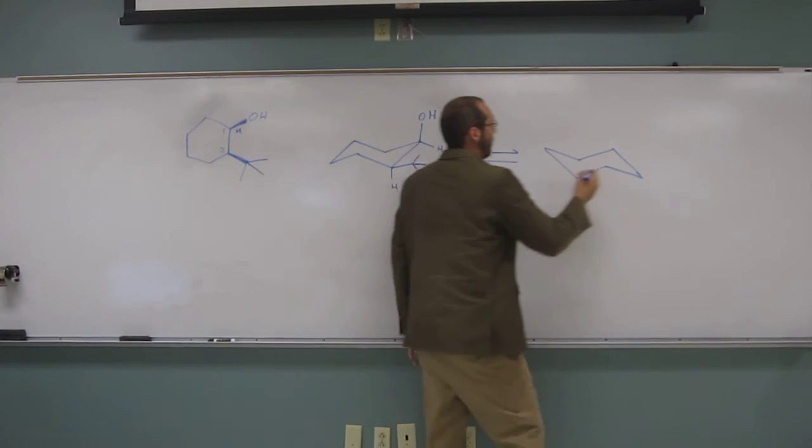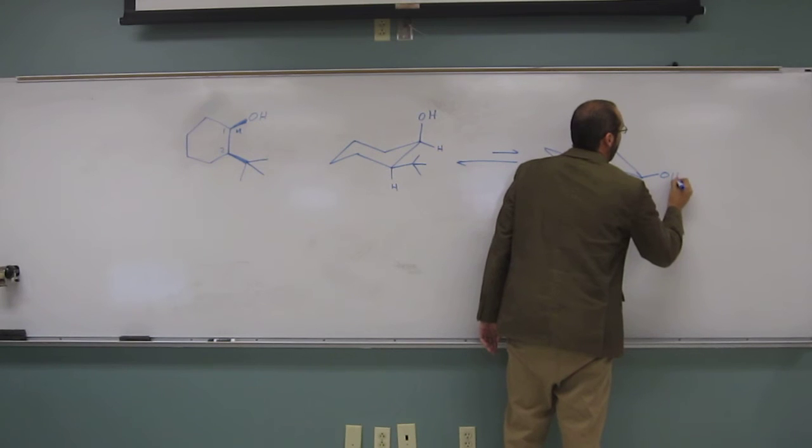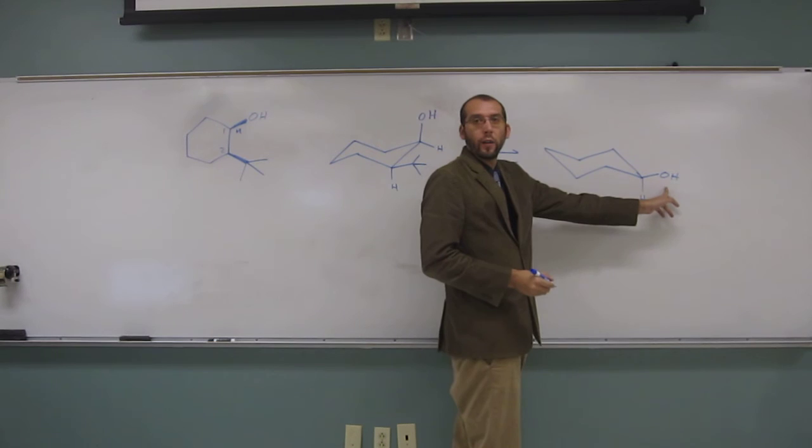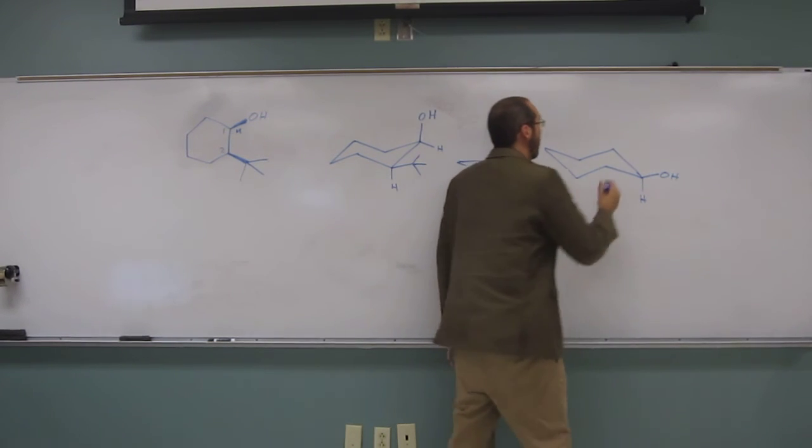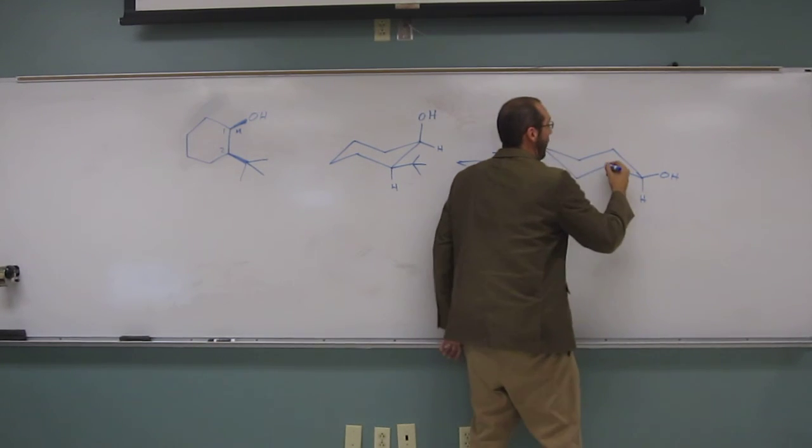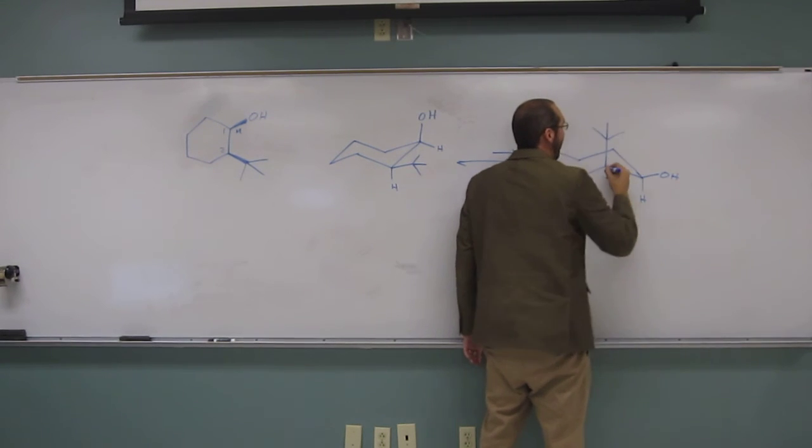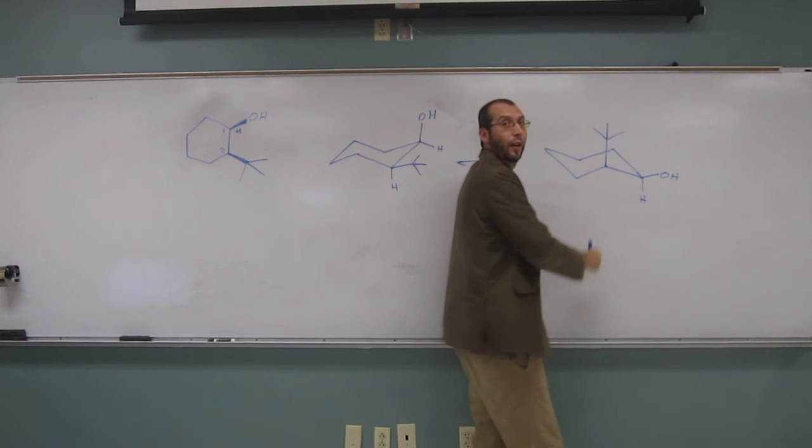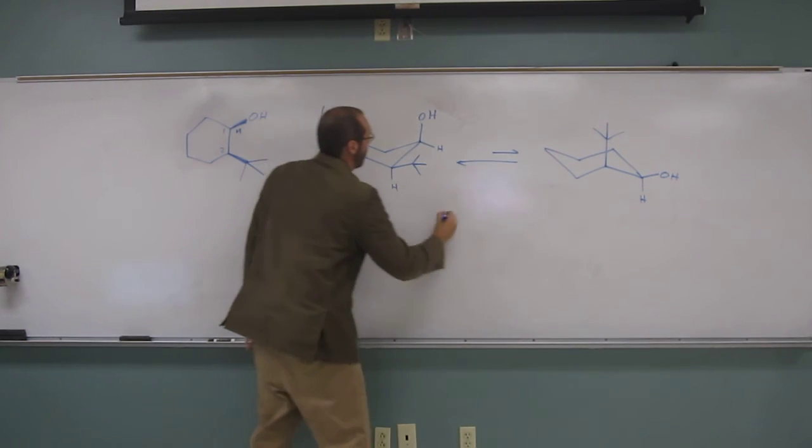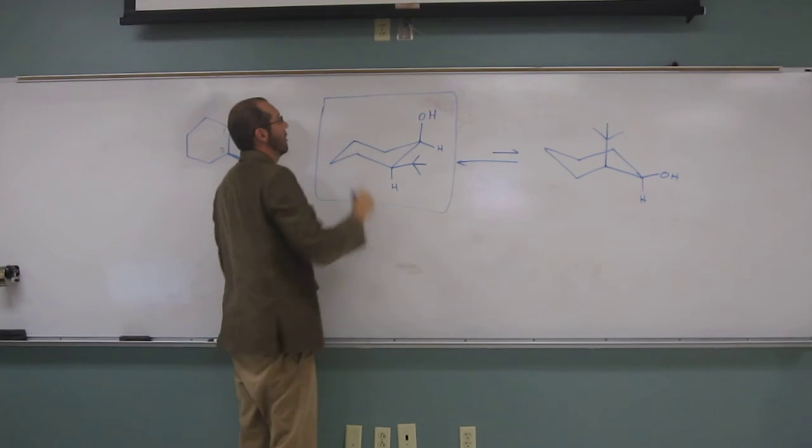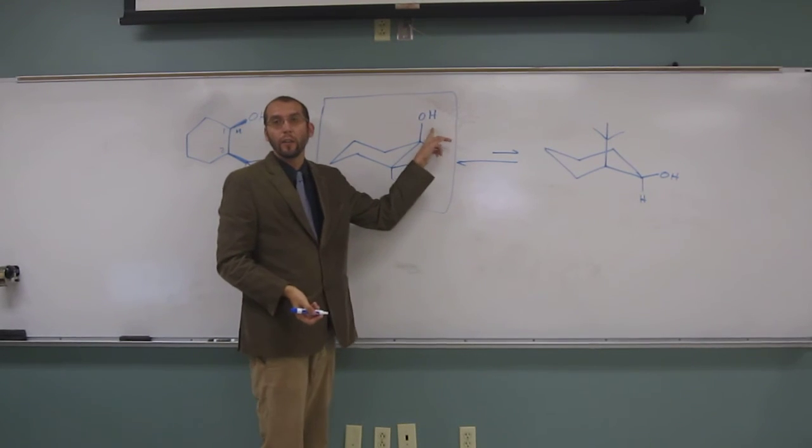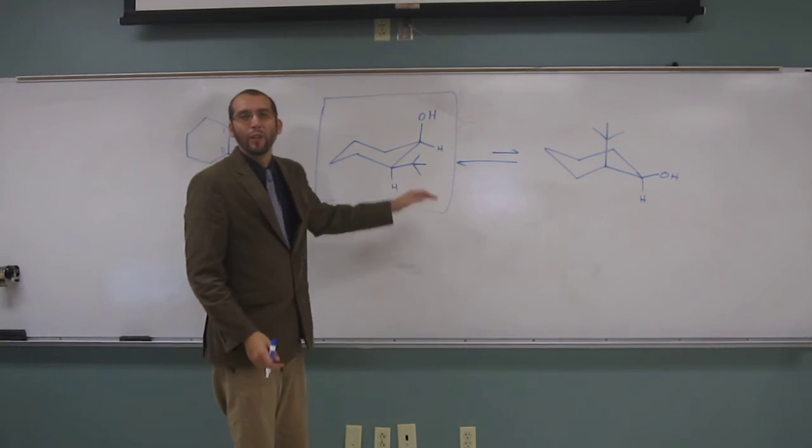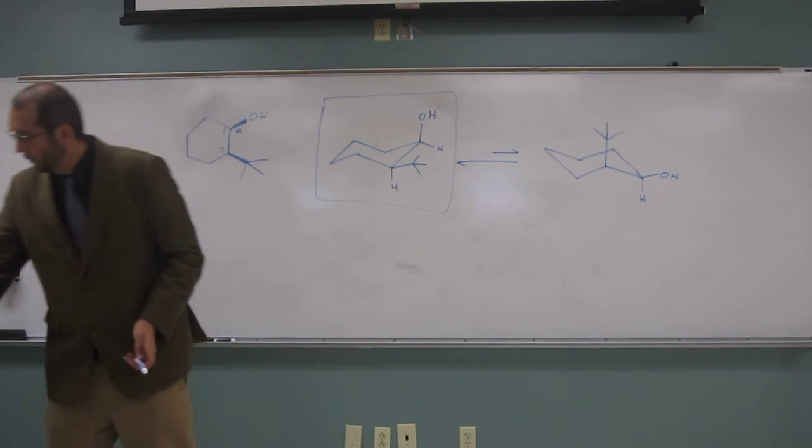You see, now we've got that group equatorial like we would prefer it to be, but now this group's still up, but we chair flip, so now it's axial. That's a huge group to be axial with. So the most favored chair conformation is the hydroxyl in an axial position, and the tert-butyl in an equatorial position. I think that's one of the answers to this.